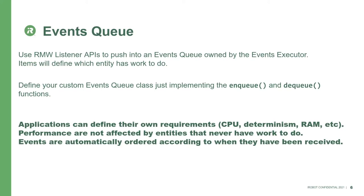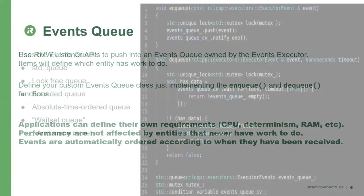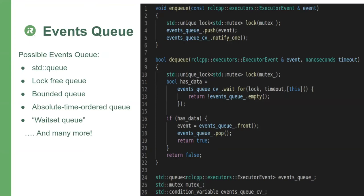Performance is not affected by entities that have no work to do, because those entities will never push anything into the queue. Regarding extensibility, the RCL CPP code will contain an event queue base class and a simple implementation, but the purpose is for users to define their own queue. Each queue may have different requirements — some users may care about reducing CPU usage, others about enforcing determinism by reordering messages according to timestamps rather than when they are received by the network stack.